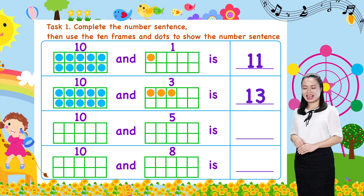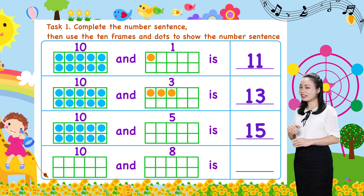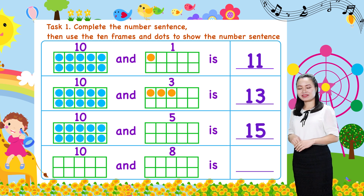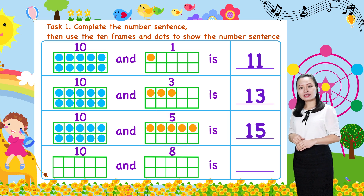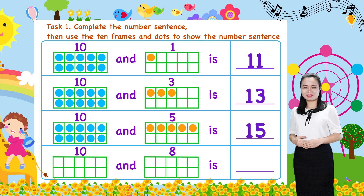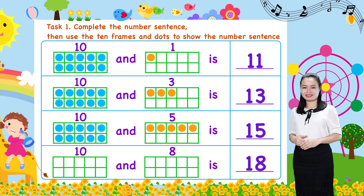Next, 10 and 5 is 15. To show this number sentence, draw 10 dots in the 10-frame, then draw 5 more dots. So there are 15 dots that represent number 15. The last one: 10 and 8 is 18. To show this number sentence, draw 10 dots in the 10-frame, then draw 8 more dots. So there are 18 dots that represent number 18.